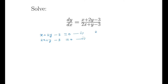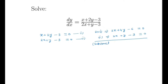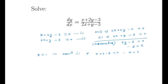Now, 2 times equation 1 gives us 2x + 4y - 6 = 0, and equation 2 is 2x + y - 3 = 0. Subtracting, we get 3y - 3 = 0, so y = 1. Putting y = 1 into equation 1, we get x + 2 - 3 = 0, so x = 1. We get the solution x = 1, y = 1.